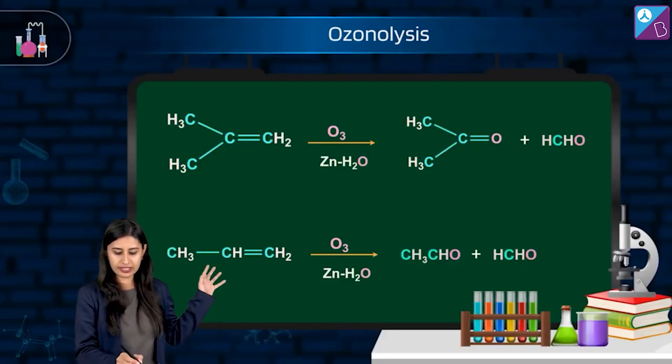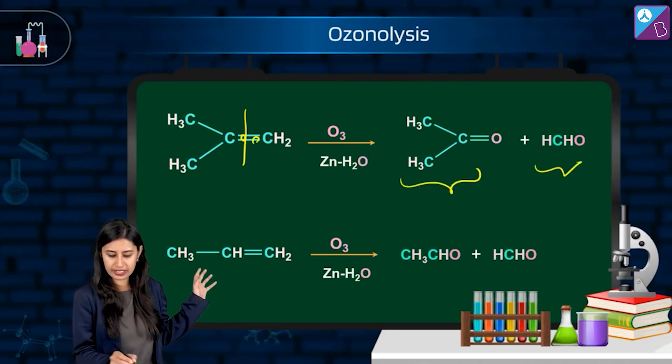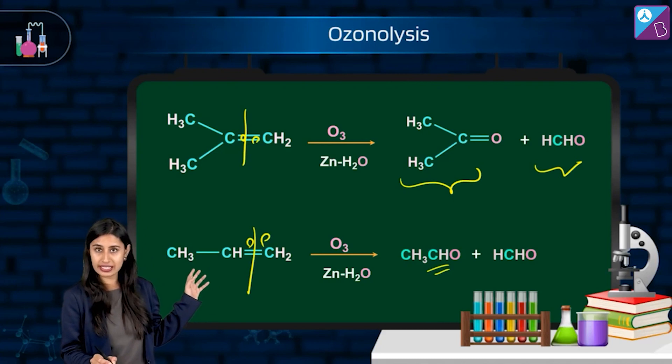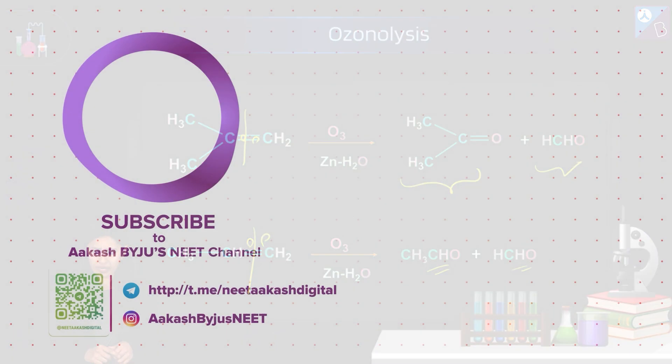So out here, for example, this is here. Can you see? Put two oxygens. So you get a propenone and you get HCHO. Break this. Put O-O here. We get ethanol and we get formaldehyde. Simple, right?